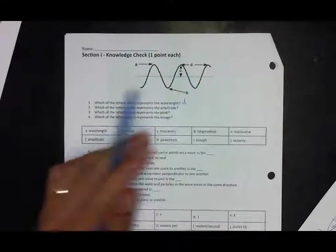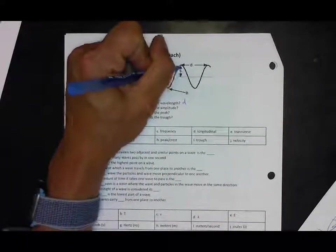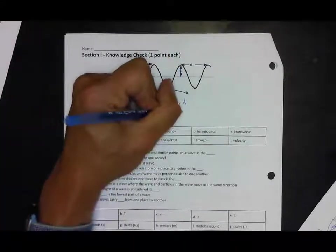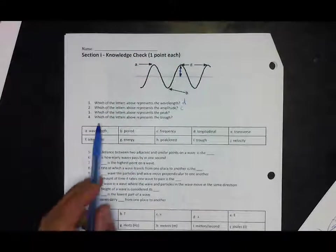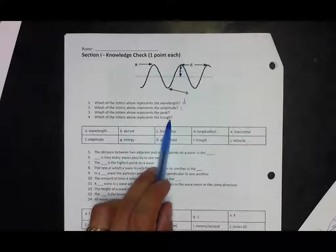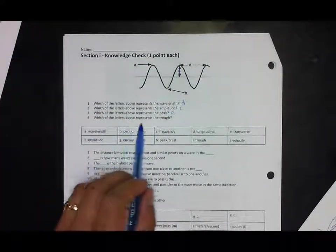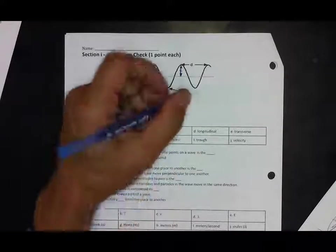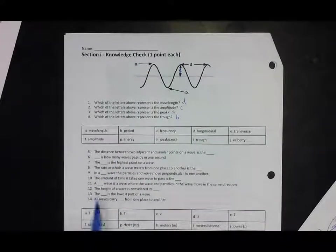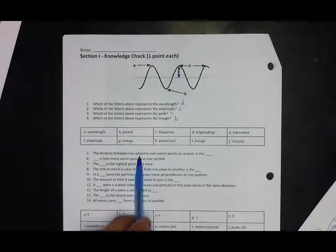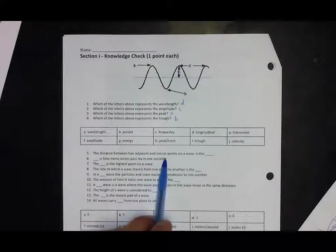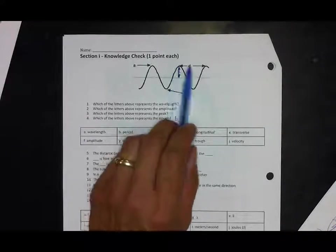Which of these letters represents the amplitude? That's how tall a wave is, the height of a wave, so that would be C. Which letter represents the peak itself? The peak, that's A. And which letter represents the trough, the bottom part? Which is B.